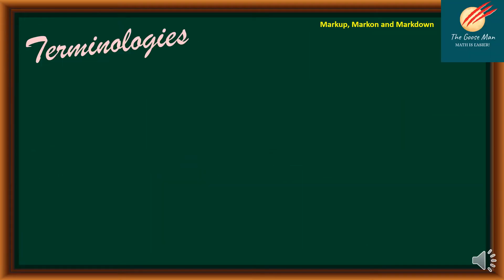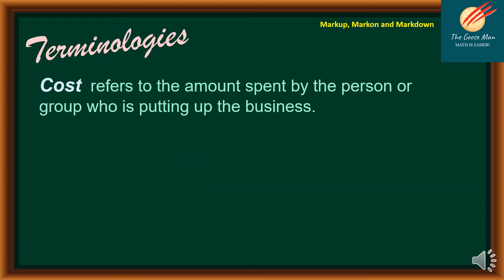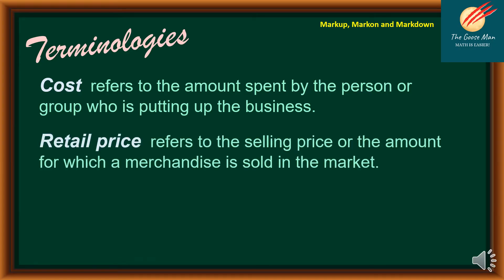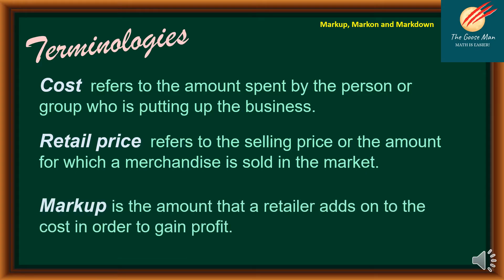Let's have the following words. The first one is cost — it refers to the amount spent by the person or group who is putting up the business. Next is retail price, which refers to the selling price or the amount for which a merchandise is sold in the market. And markup is the amount the retailer adds on to the cost in order to gain profit.